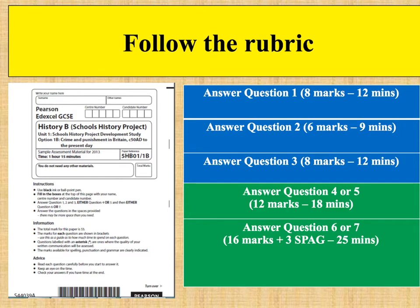The first top tip is to make sure that you are answering all the right questions. Everybody on the Crime and Punishment exam has to answer question 1, question 2 and question 3. Then you have a choice of doing question 4 or 5 and then question 6 or 7. Look at the guide here to see how long you should be spending on each question. Timing is really important for this exam.